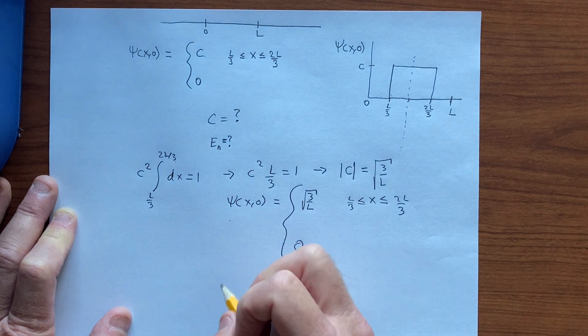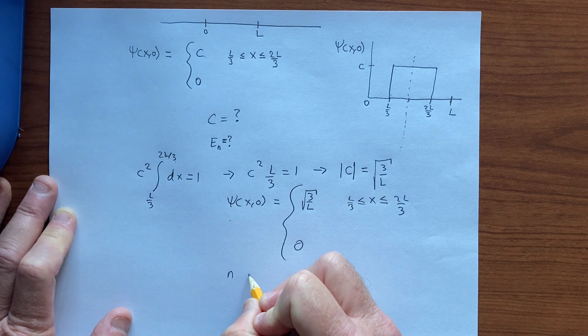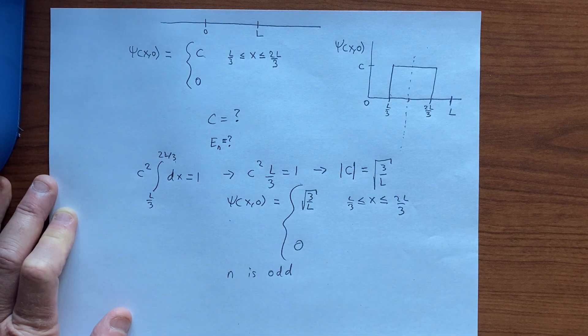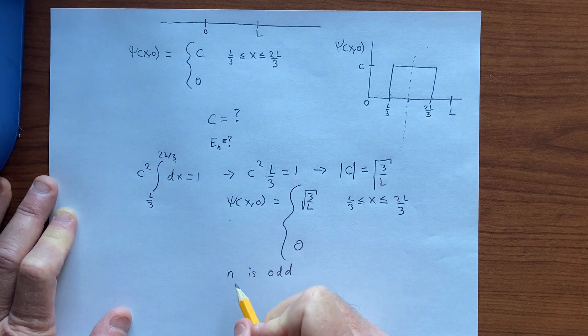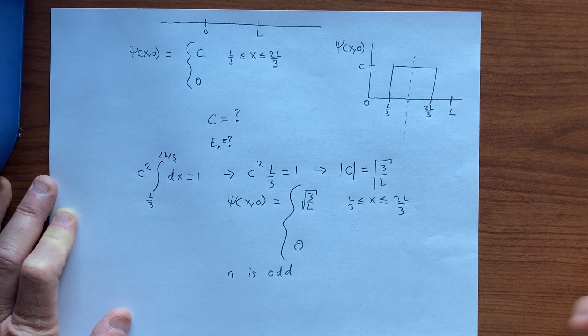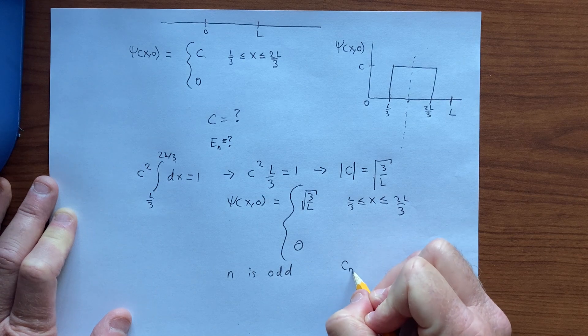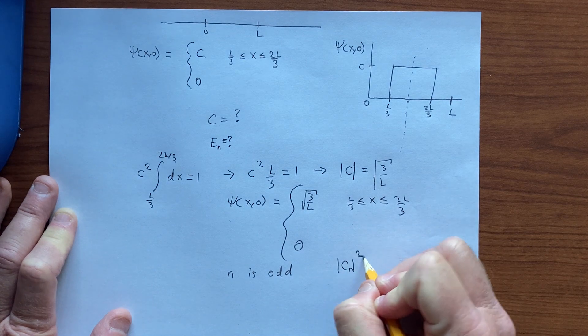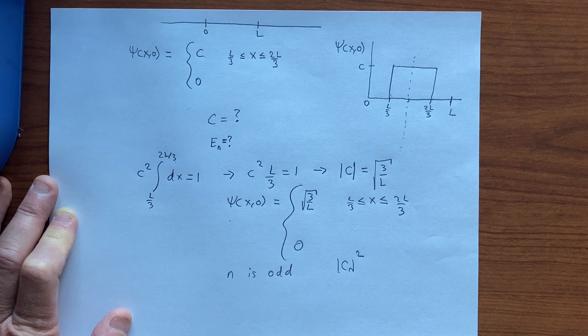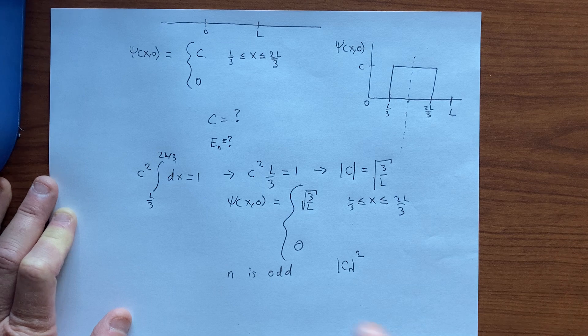And so the ones that have even parity are n odd. And so in a measurement, you'll get an odd n as the energy, and we could evaluate that and see how big each cn is and take the modulus squared if we wanted the weight or the probability of finding that value of energy, but n would have to be odd.